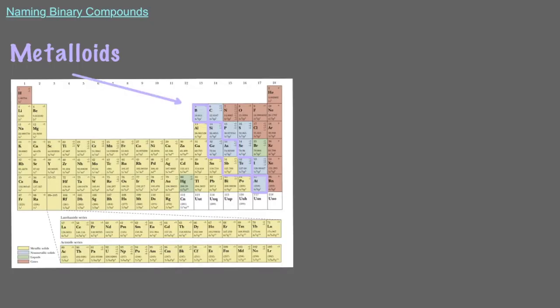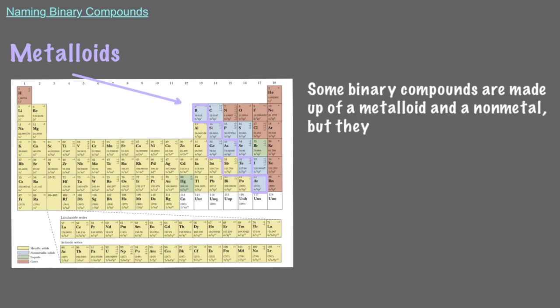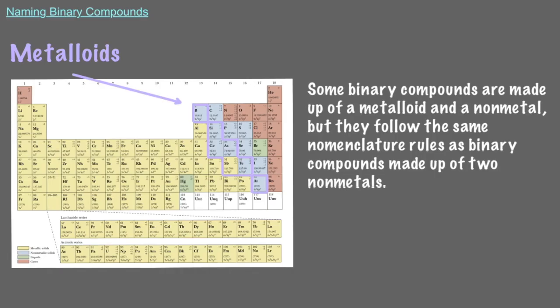It's important to mention that there is a third category of elements besides metals and nonmetals, metalloids. Metalloids correspond to the elements in this region of the periodic table. Some binary compounds are made up of a metalloid and a nonmetal, but they follow the same nomenclature rules as binary compounds made up of two nonmetals.